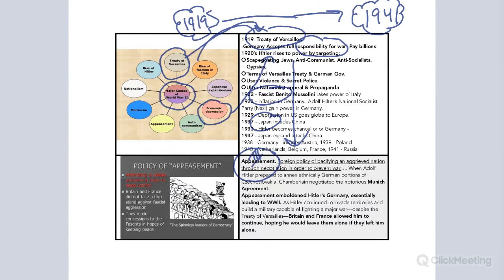What is appeasement? This was the European policy — a nonviolent approach to stopping fascism. It's something that both Britain and France used to try and stop the rise of fascism and prevent a war — a nonviolent approach to slow down Germany's growth and the rise of fascism in Europe. Did it work? No, it did not work at all. In fact, it ended up emboldening Germany to continue being more and more aggressive in its expansion.